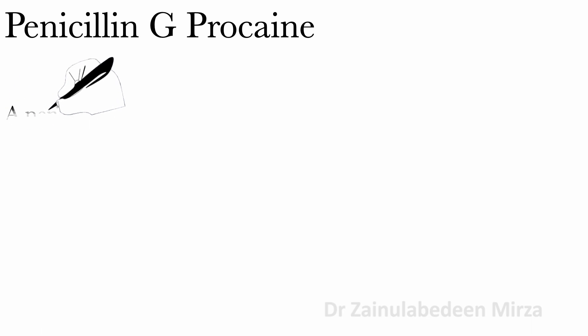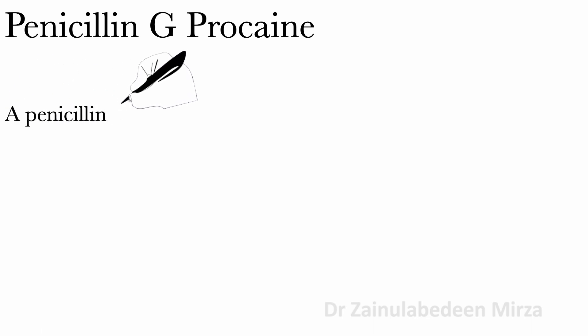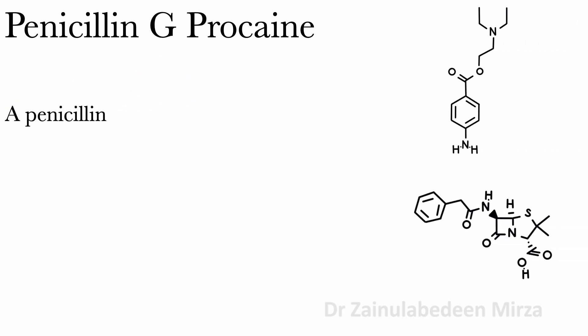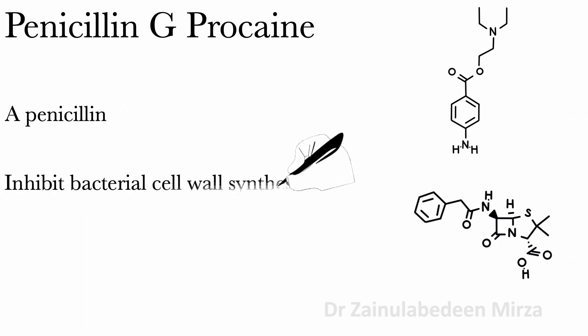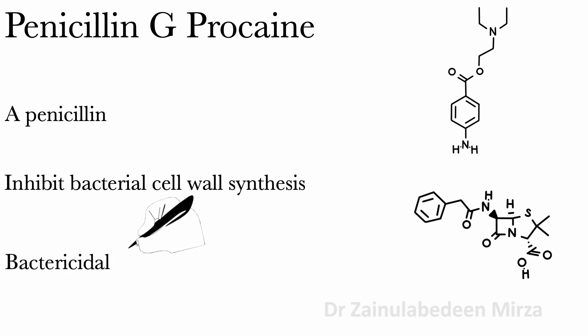Penicillin G-procaine is a penicillin that inhibits bacterial cell wall synthesis by binding to one or more of the penicillin-binding proteins of bacteria. It is a combination of benzoyl penicillin and procaine, and it is bactericidal.